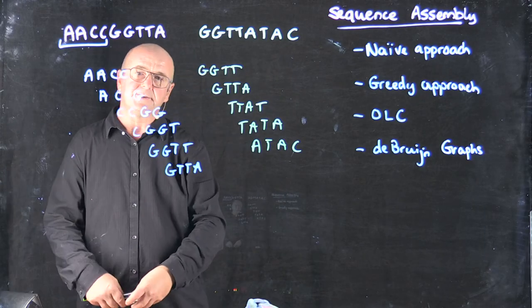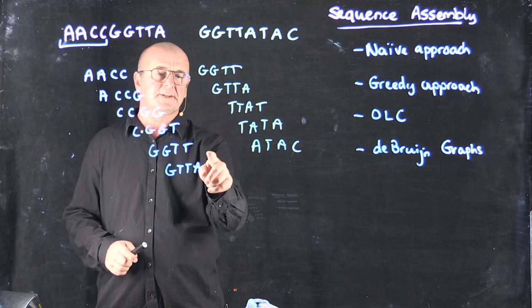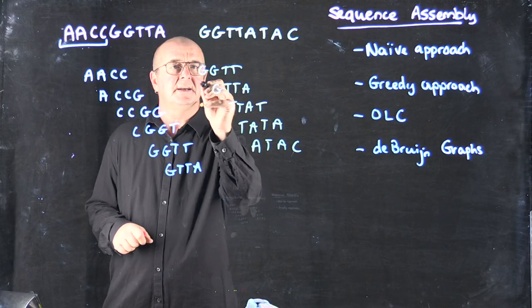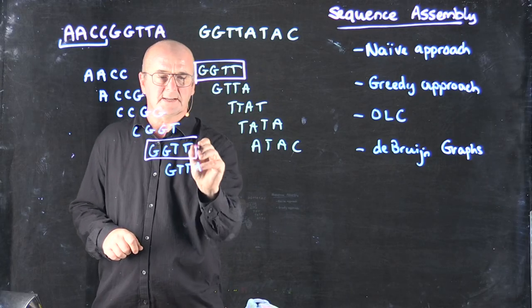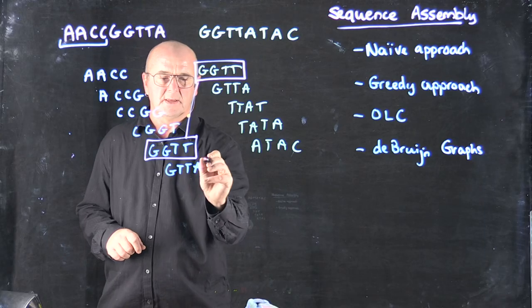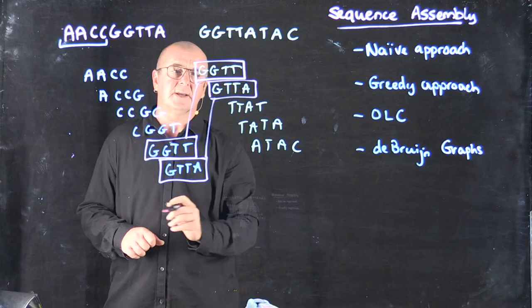Now all I have to do is identify the 4-mers that overlap between my two sequences. And so you can see that I have this k-mer here maps exactly to this one and the next one along maps exactly to the next one along here.